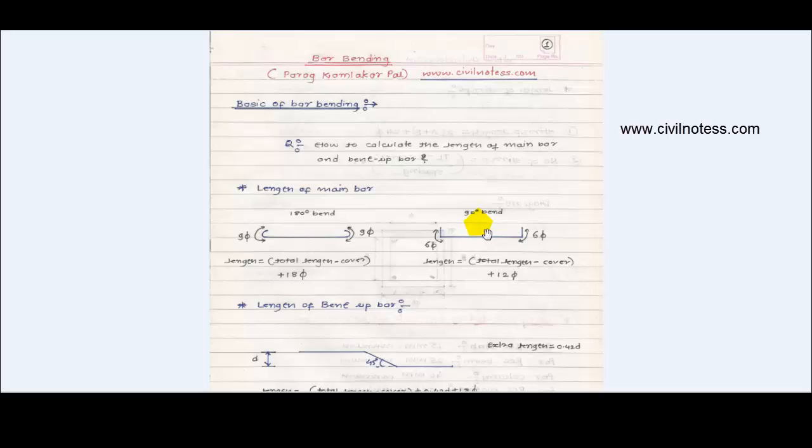To calculate the length of main bar, the 180-degree bend or 90-degree bend are important. If there is a 180-degree bend, the anchor value is 9d; if it is 90-degree, it is 6d. The addition of both gives 12d, so these are the standard bend allowance values used.